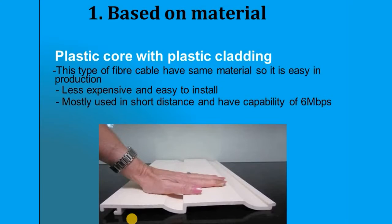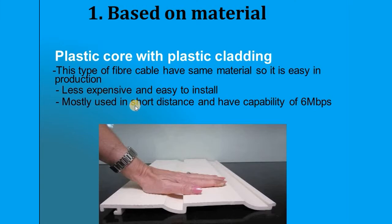Some optical fibers have a plastic core and a plastic cladding — the same material for both core and cladding. This type of fiber cable is very easy to produce, less expensive since it is made of plastic, easy to install, and is generally used for short distance communication channels.